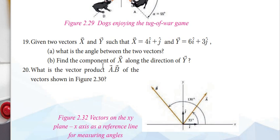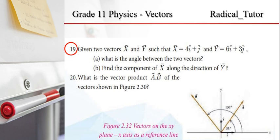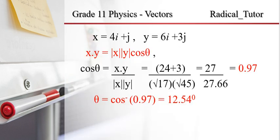You can find the magnitude of x along the direction of y. As you can see, x dot y is the scalar product of x and y.